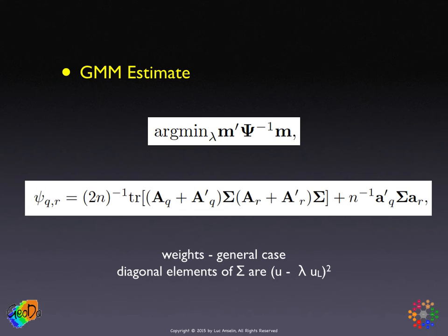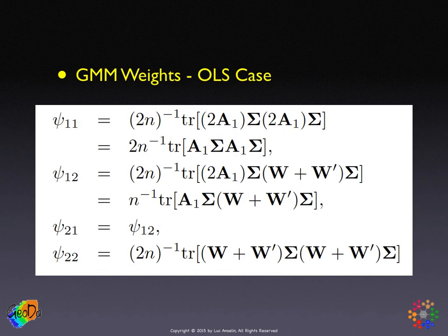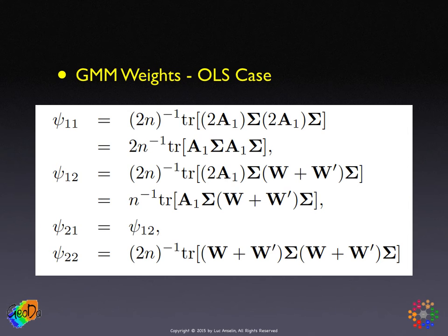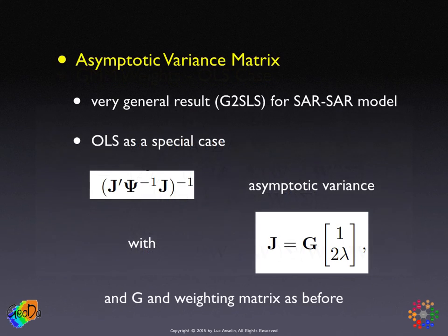In the OLS case it simplifies in that the second term in the weighting matrix disappears. The elements — just to give you a sense — are all complex trace manipulations which involve the spatial weights matrices W and W prime, and involve the variance covariance matrix, which is heteroskedastic and is replaced by diagonal elements which are the squares of the spatially filtered residuals. This is all very complex mathematically, but the principle is actually pretty simple, and it's a very general and very powerful result.